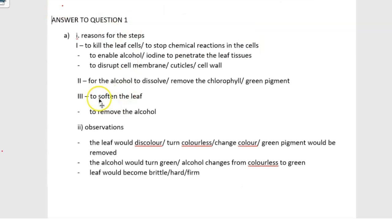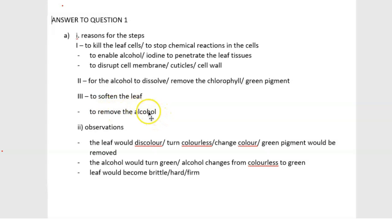For step III, the leaf was then dipped in warm water for three seconds. So why did we dip the leaf in warm water? It was done to soften the leaf, and also to remove the alcohol from the leaf.